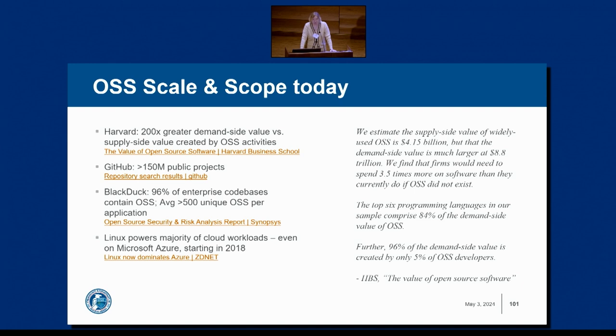A Black Duck report by Synopsys estimates that about 96% of code bases contain OSS — a significant signifier of prolific usage. We also had a cultural shift: in the dot-com boom of the 90s, OSS was not perceived favorably, but now Linux is essentially driving Microsoft Azure. So how can CISA and the US government get involved responsibly, without trying to regulate — which we neither should nor have any business doing — while preserving the equities of the OSS ecosystem?